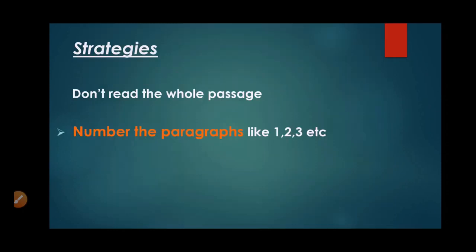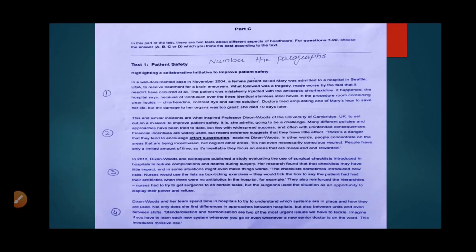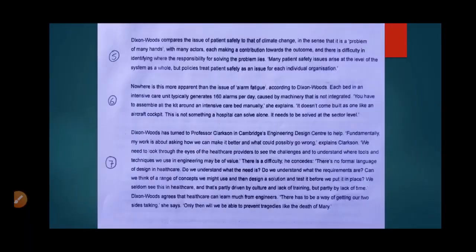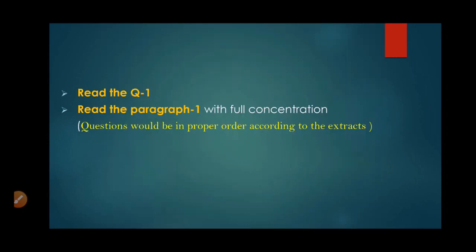Don't read the whole passage. First number the paragraphs 1, 2, 3, 4, 5, 6. After numbering, read question number 1 and encircle the important words in the question. After underlining or encircling the important words or phrases in the question, read paragraph number 1 with full concentration and look for those important points which you have underlined.